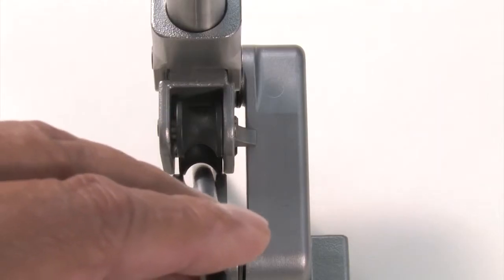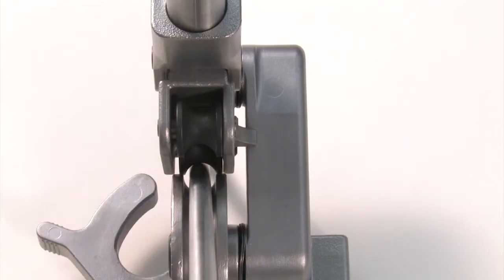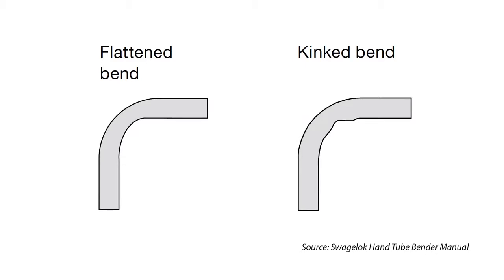This tube is too small for the bender dies. This may cause flattening or kinking at the bend.